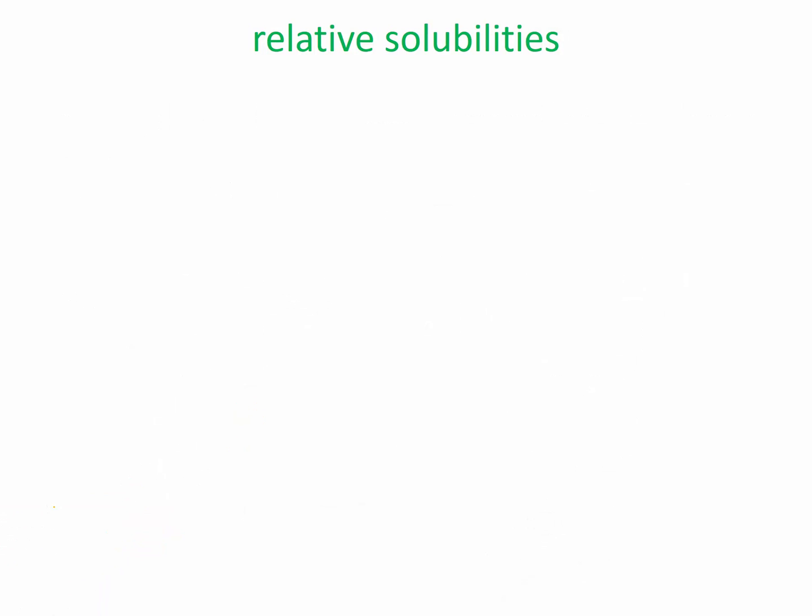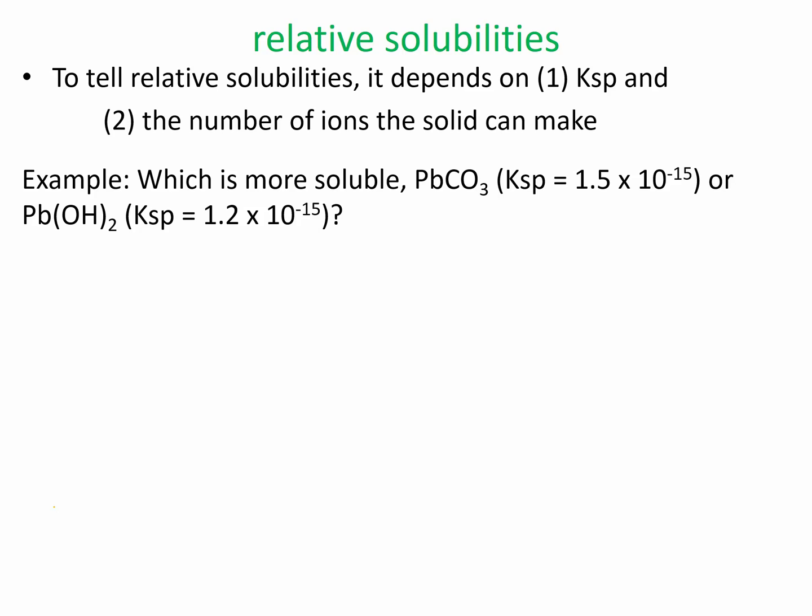So to tell relative solubilities, it's going to depend on Ksp and the number of ions the solid can make. So let's take a look at this example, which is more soluble, lead carbonate with a Ksp of 1.5 times 10 to the negative 15th, or lead hydroxide with a Ksp of 1.2 times 10 to the negative 15th.